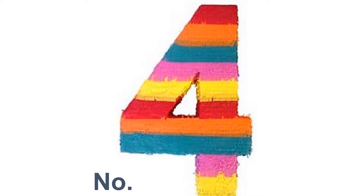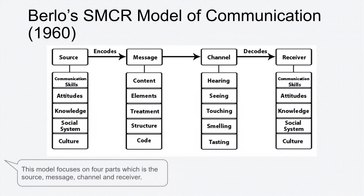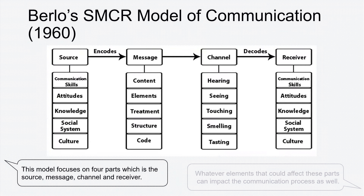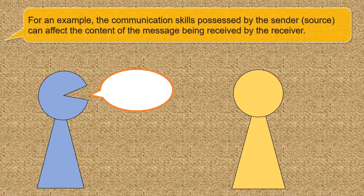Number 4: Berlo's SMCR model of communication, 1960. This model focuses on four parts: the source, message, channel, and receiver. Whatever elements that could affect these parts can impact the communication process as well. For example, the communication skills possessed by the sender or source can affect the content of the message being received by the receiver.